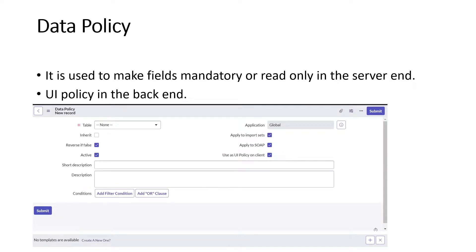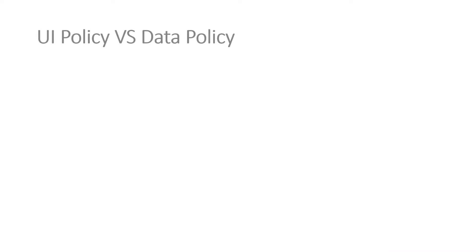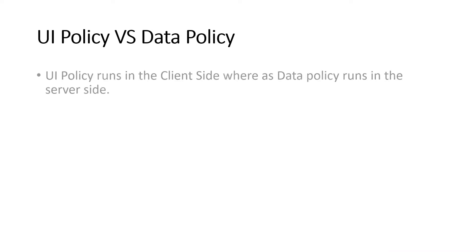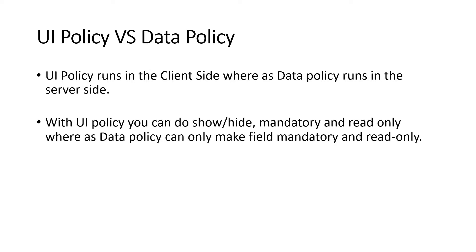This is a screenshot of the data policy form view, and I'll explain each field of this form. The first difference: UI policy runs on the client side, while data policy runs on the server side. With UI policy you can show or hide fields — for example, if you change the category, a service option becomes hidden.